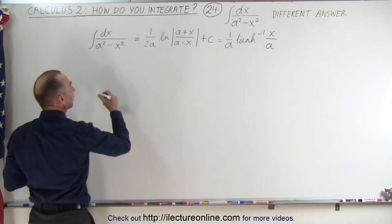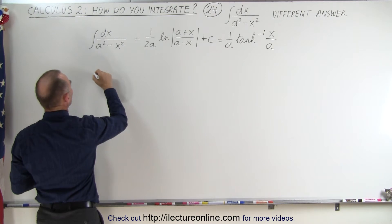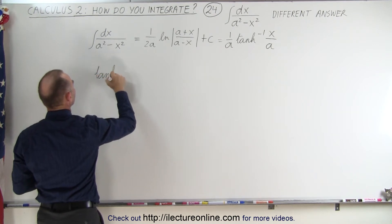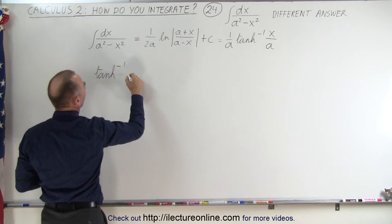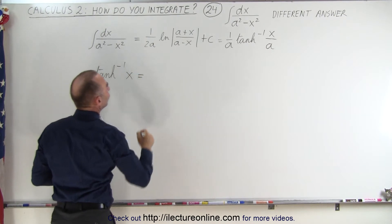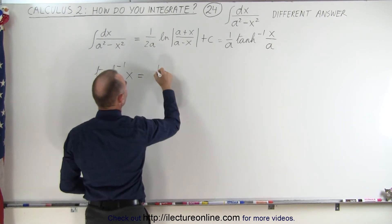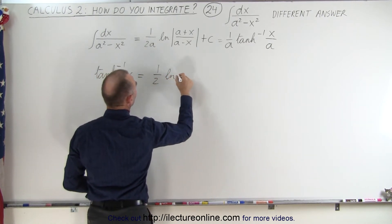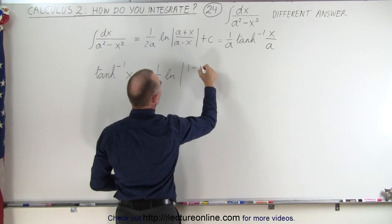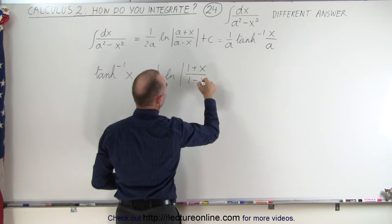Well, it turns out that the definition of the inverse hyperbolic tangent of x is equal to one-half the natural log of one minus x... oh no, that's one plus x over one minus x.